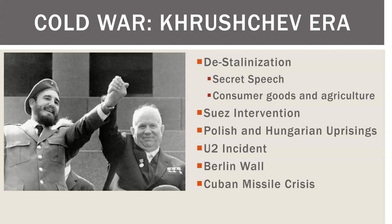In 1956, at the 20th Party Congress, Khrushchev made what is known as the 'secret speech,' criticizing Stalin and saying he was wrong. They started focusing on agriculture and consumer goods — taking care of their people. You should also look up the Kitchen Debate on YouTube — Nixon, who was vice president at the time, went to Russia and got into an argument with Khrushchev about who does a better job providing goods for their people.